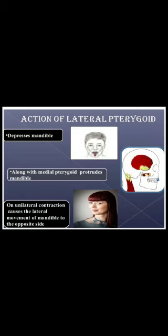Action: this is the one muscle that helps in depression of the mandible — it helps in opening the mouth, whereas the other muscles help in closing it. Along with the medial pterygoid, it helps in protruding the mandible. Unilateral contraction causes lateral movement of the mandible to the opposite side.